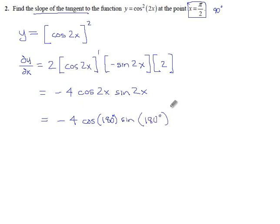And unfortunately that makes for a kind of lame result, because we get minus 4, the cosine of 180 is negative 1, and the sine of 180 is 0. So overall the slope of this line is 0.